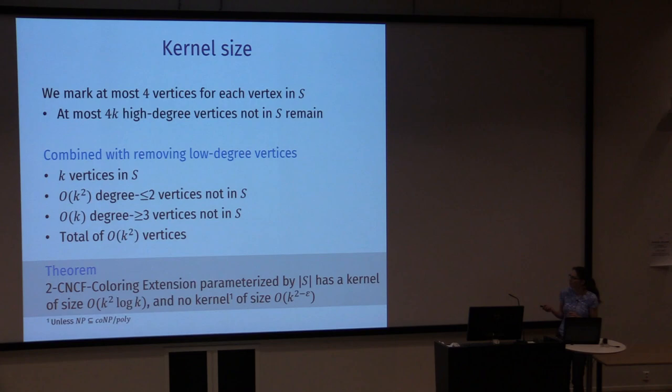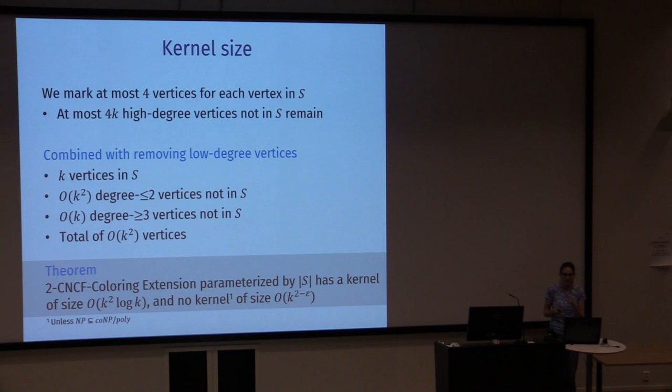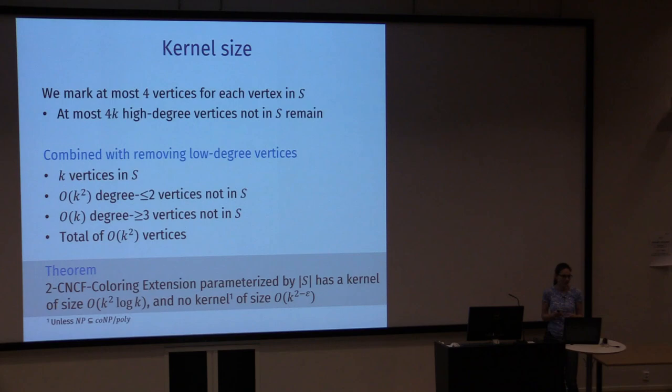It's not immediately obvious this gives a kernel of that size since edges also need to be stored, but with a little more work you can obtain a kernel storable in order k-squared log k bits. We also show there is no sub-quadratic kernel under the assumption that NP is not in co-NP/poly, meaning this gives a tight kernelization bound up to a logarithmic factor.